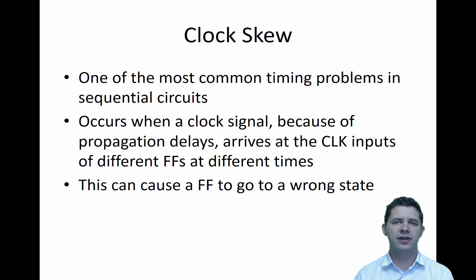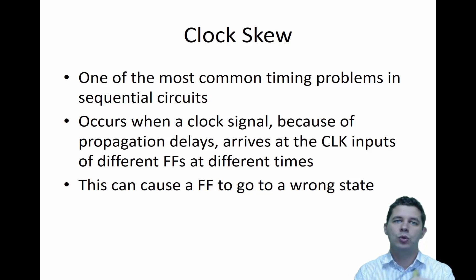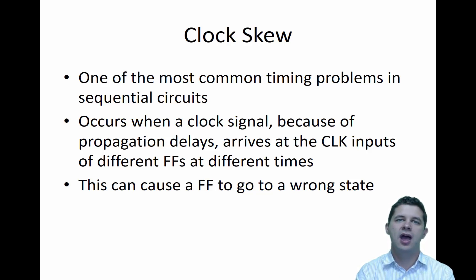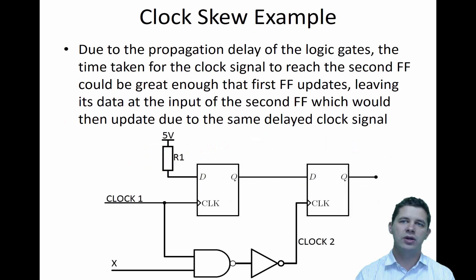One problem that we can deal with, particularly for fairly large systems, is clock skew. Essentially it's a timing problem where it becomes difficult for a large circuit to have precisely the same clock — down to a few nanoseconds — reaching each part of the circuit or each flip-flop at the same time. Depending on the length of the wire or PCB trace used, clocks will be arriving at slightly different times. If one is arriving at a different time to another, it may cause a flip-flop to go into an incorrect state, so this is something we need to deal with, and we might use some clock equalization.